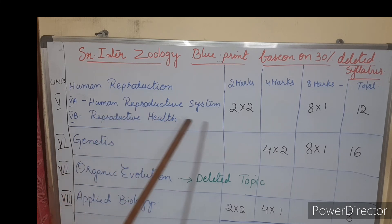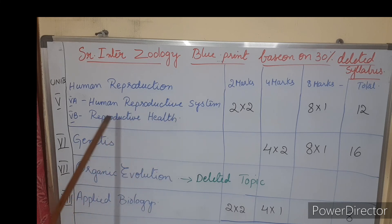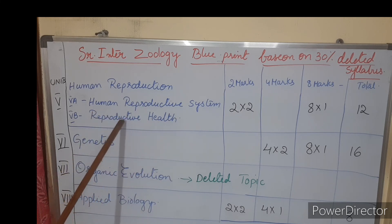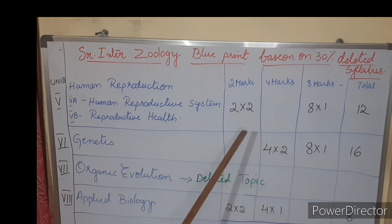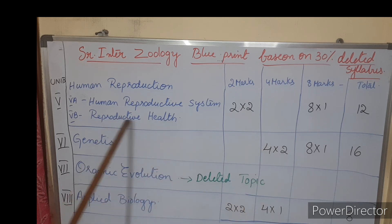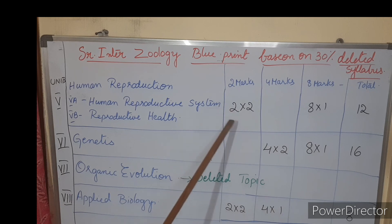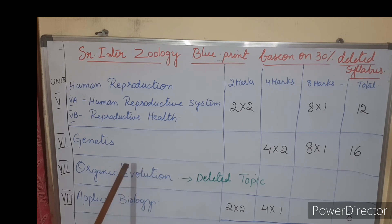For the eight-mark question in Human Reproduction, focus on the Male Reproductive System, Female Reproductive System, and Reproductive Health — all are equally important. These are all the total marks and from where we get the questions. Students, please focus on chapters where we get more marks and don't waste your time on deleted topics. Thank you very much.